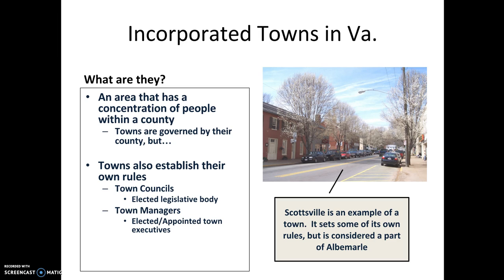Another entity in Virginia is known as a town, or an incorporated town. Don't get towns and cities confused — a town is different from a city because it is not independent from the county that it resides in. These towns spread out around the state elect town councils or town managers, and they take care of things within the town limits — setting up ordinances, street lights, managing communal property, parks, things like that. But they're still very dependent upon the county that they reside in.